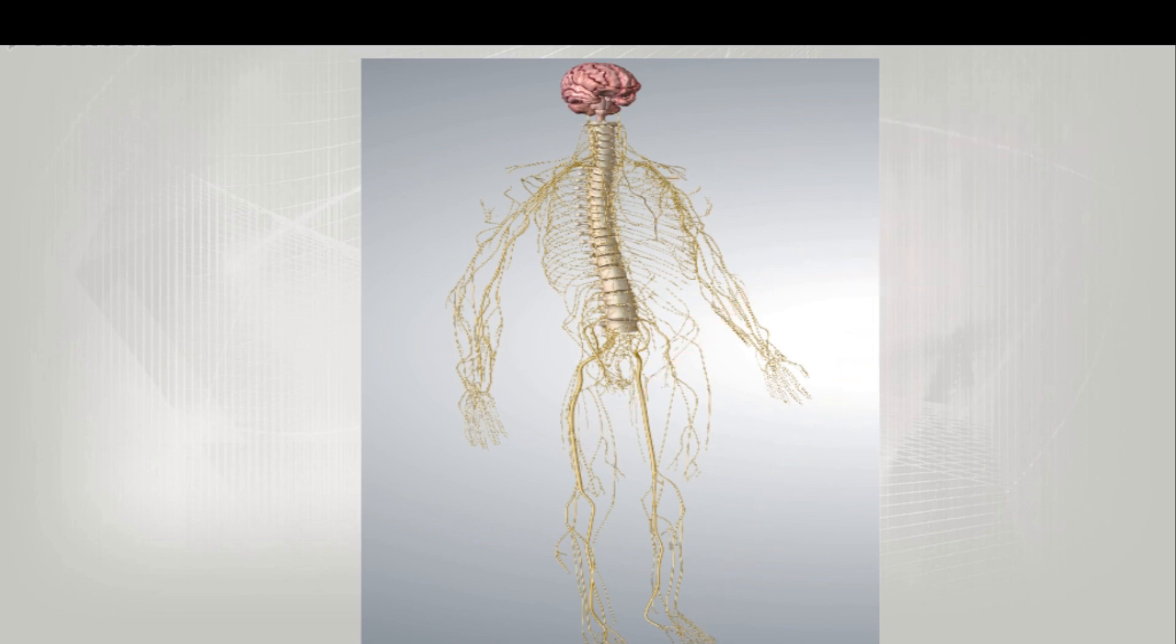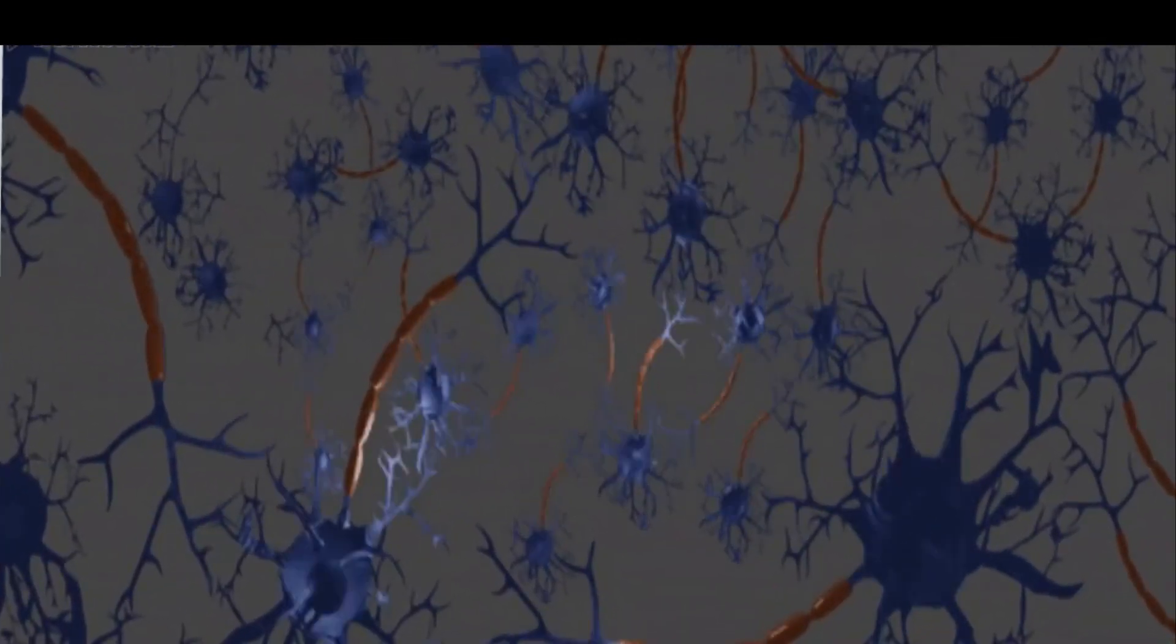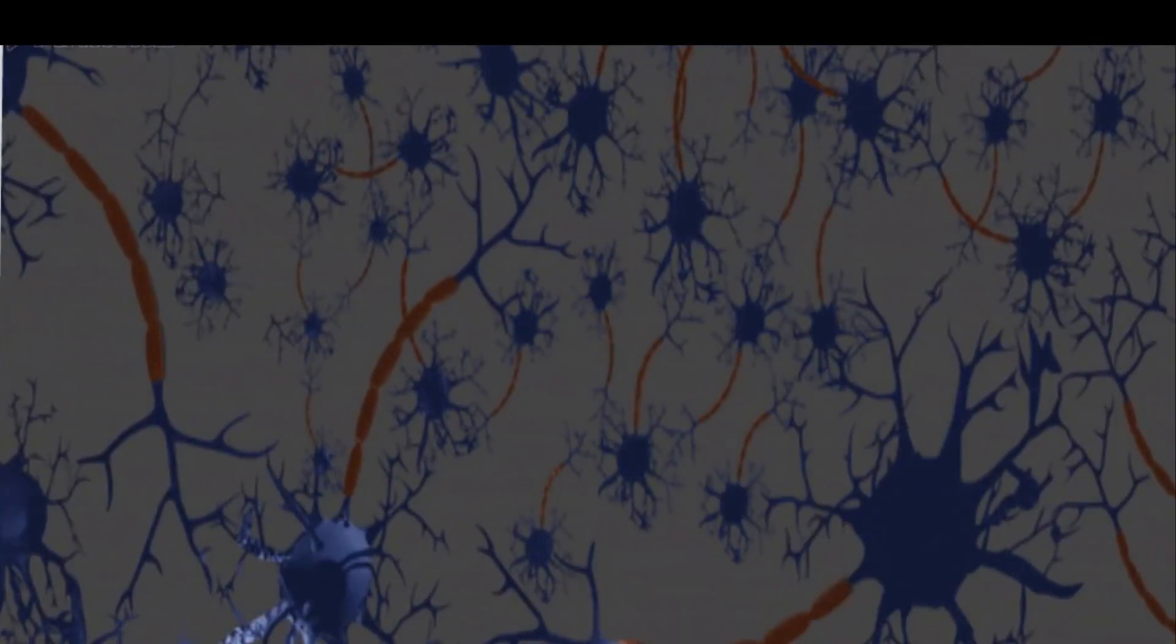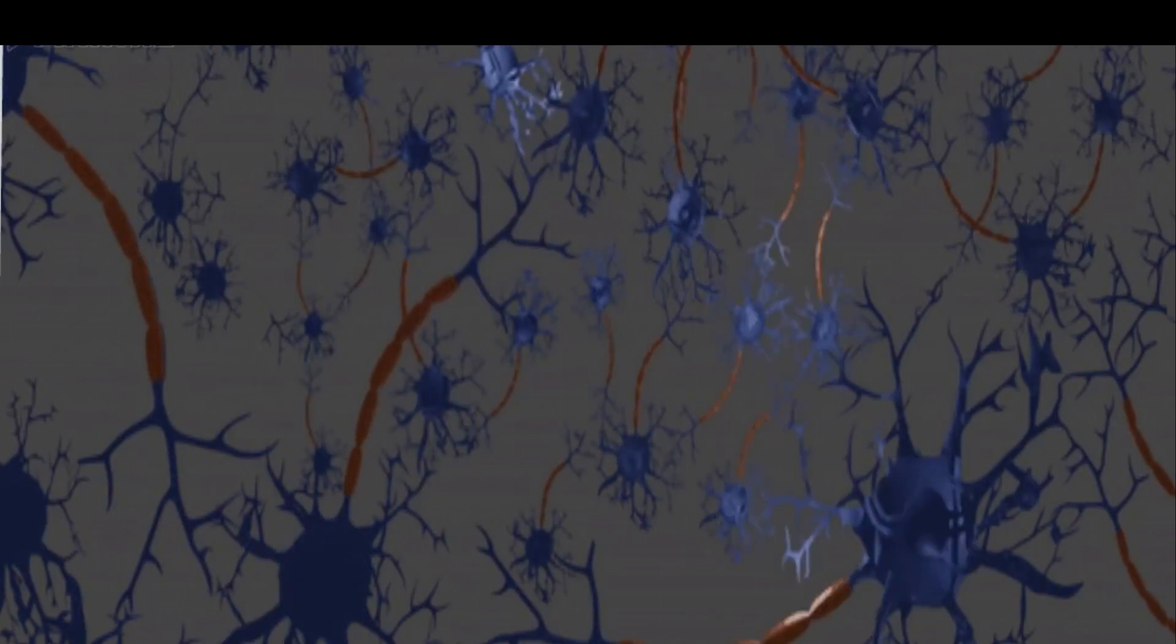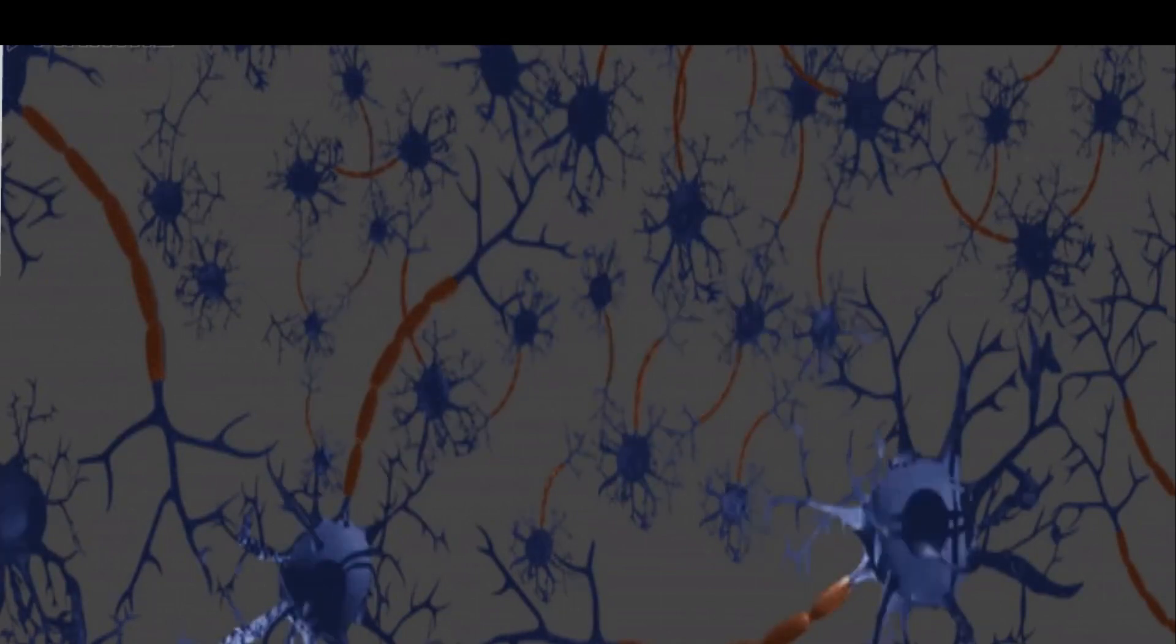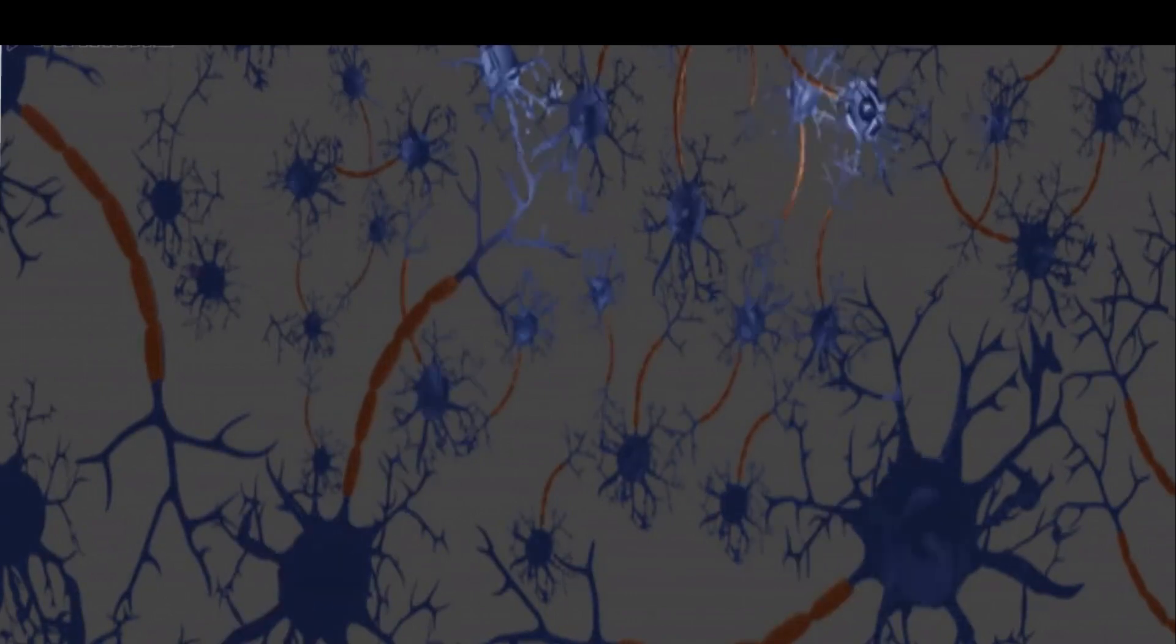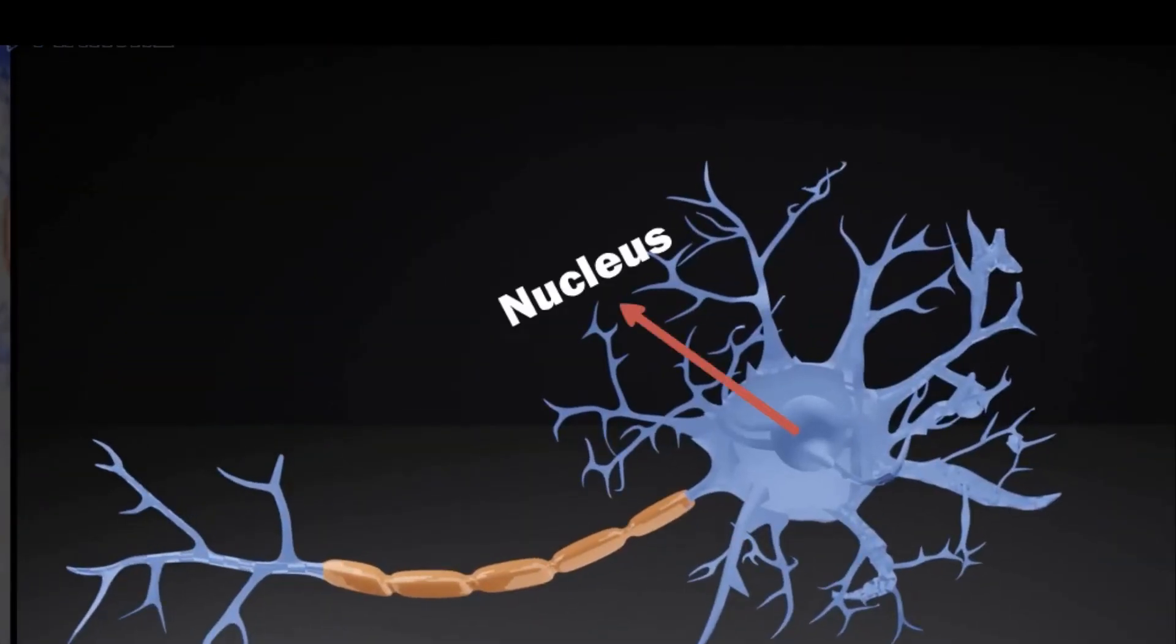The neuron or nerve cell is the basic structural and functional unit of the nervous system. All parts of the nervous system are made up of neurons. Neurons transmit messages in the form of electrochemical waves called nerve impulses. The part of a neuron which contains the nucleus and most of the cytoplasm is called the cell body.